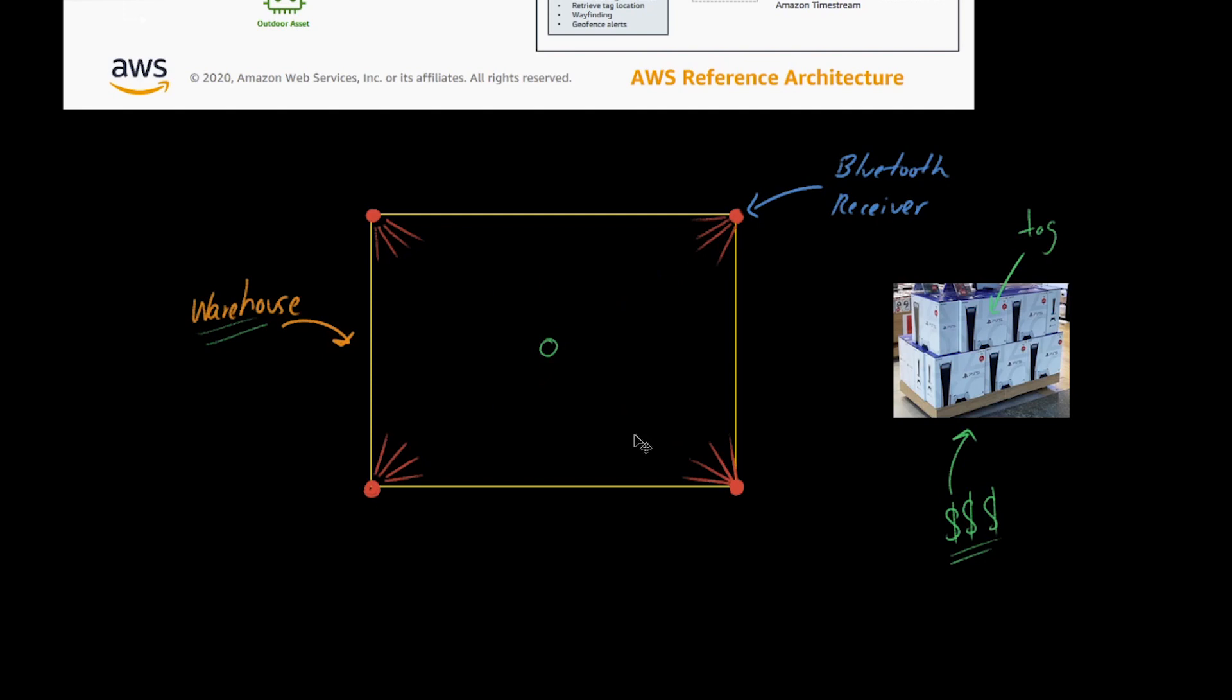Now if I am somewhere over here, where my PS5 skid is, I may have something like 50% signal to these two corners and maybe something like 10 or 15% to these guys.